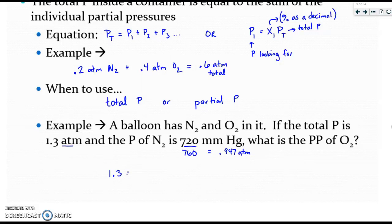So total pressure equals the first partial pressure plus the second partial pressure and then I'm just going to subtract to find the pressure of oxygen and I get 0.353 atm.